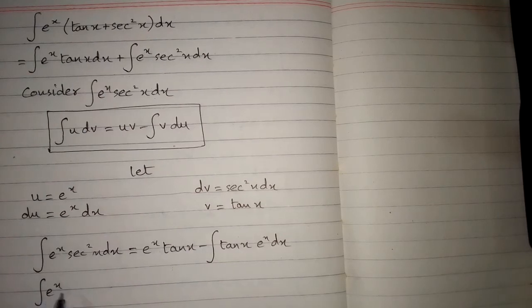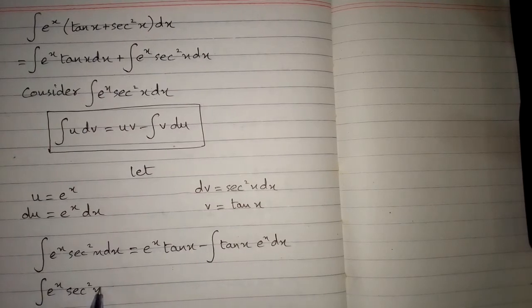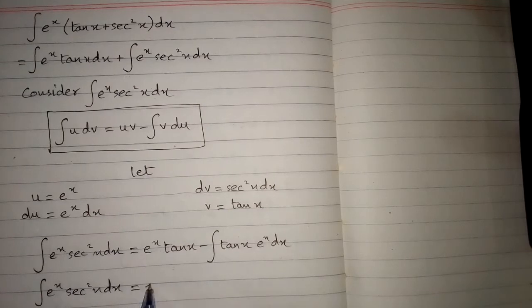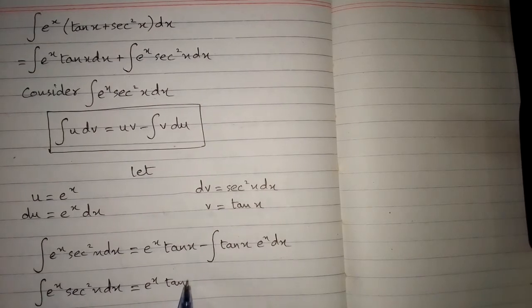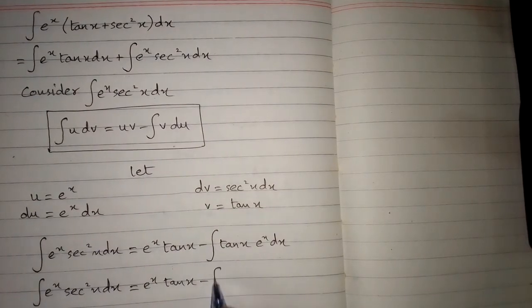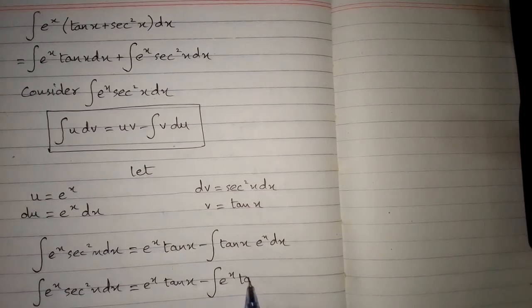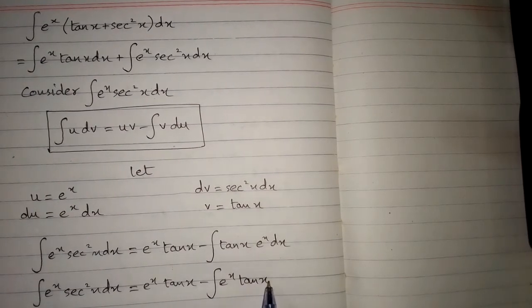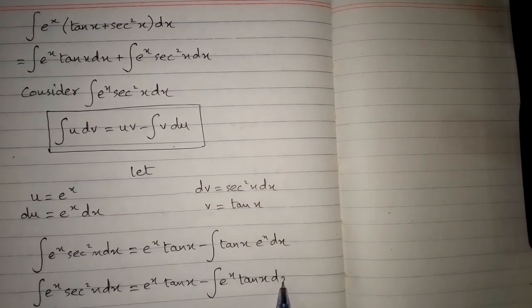After rearrangement we have e to the power x tan x minus the integral of e to the power x tan x dx.